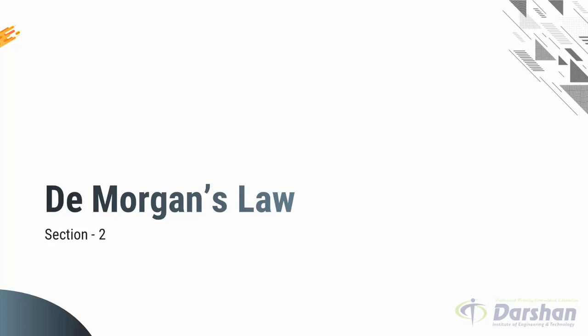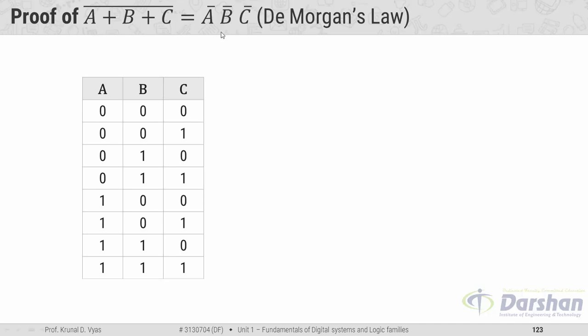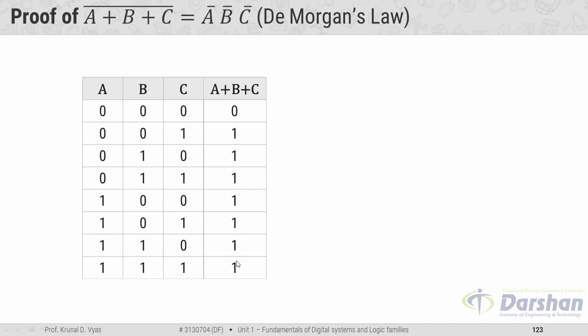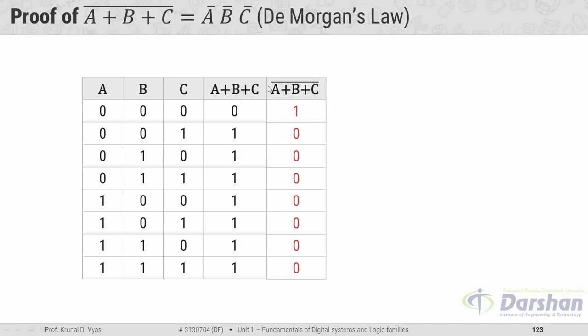The second section covers De Morgan's law, which is very helpful for reducing Boolean logical expressions and is the most important topic from an exam point of view. Here we use three variables. The first theorem states: (A + B + C)-bar equals A-bar·B-bar·C-bar. We verify this using a truth table with three inputs A, B, and C — giving eight total combinations. For the LHS, A + B + C is 0 only when all inputs are 0, otherwise 1. Its complement flips these values.